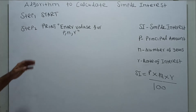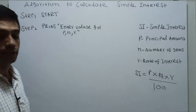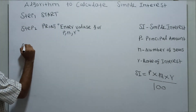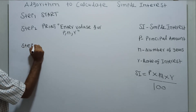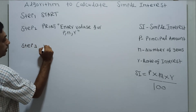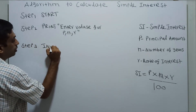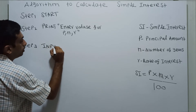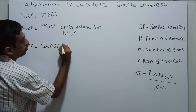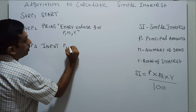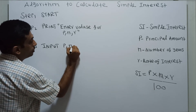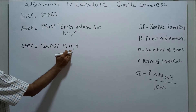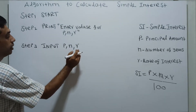Ask the user to enter the values for P, N and R, obtaining input as principal amount, number of years, and rate of interest.